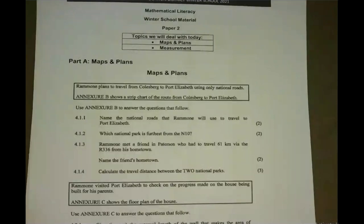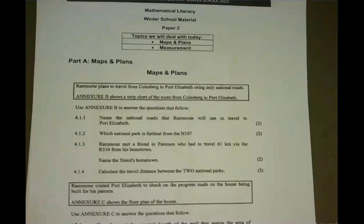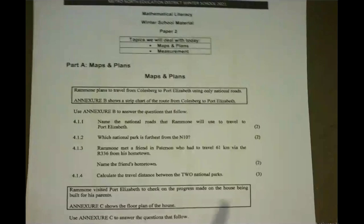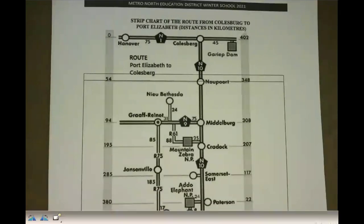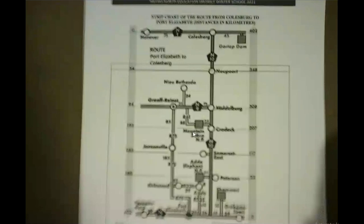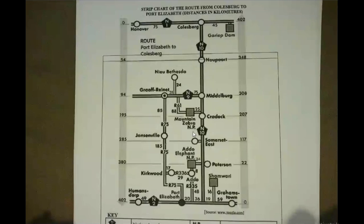Let's move on to maps and plans. The first question we'll look at is 4.1.1(b), which is a strip map. A strip map shows distances between towns — a nice map for planning purposes. Let me zoom out so you can see the whole map. As you can see, this strip map has quite a few distances between different towns, plus a key at the bottom.